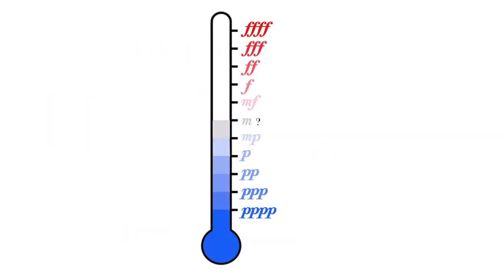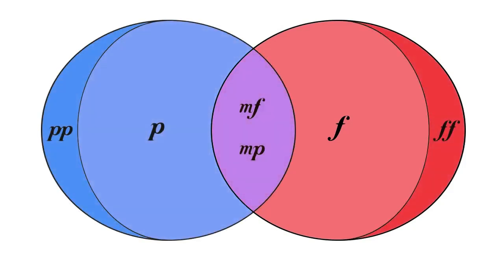Therefore, I propose that we bin the entire notion of the dynamic thermometer and exchange it for a Venn diagram. On this side is the quality of force, on the other, restraint. Where they interact in the middle is where mezzo piano and mezzo forte occur, with the important caveat that these are states that are highly directional.